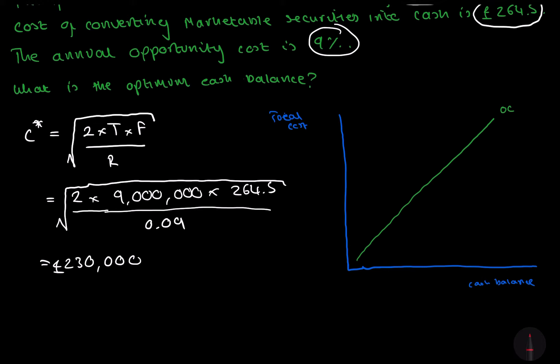And this is similar with our transaction cost, our fixed cost of converting these marketable securities. It goes a little bit like this. It's a little bit of an exponential like that. And the reason for this is when we take out our larger cash balance, we only incur this £264 once on our total sum, total cost.